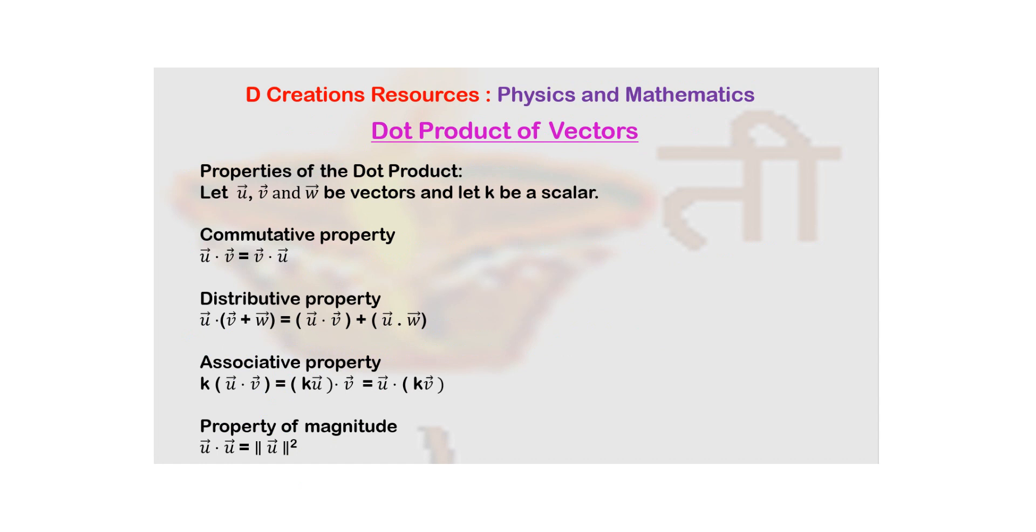Now, when you see these properties, they can be useful to you in some complicated situations. When certain vectors are there and you want to calculate it, your life will become simpler. Because instead of, for example, doing these two dot products, you can just take one dot product here. In this way it can be helpful.